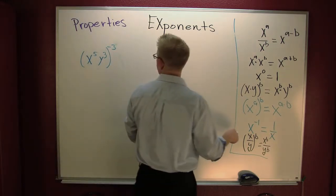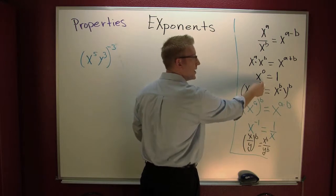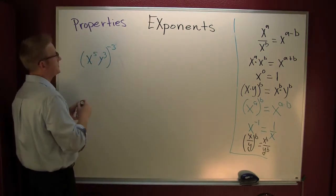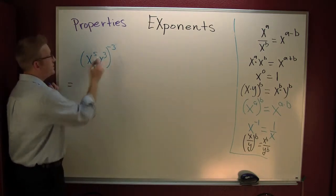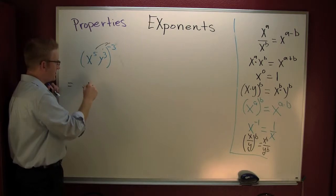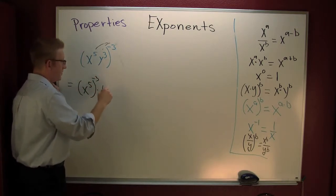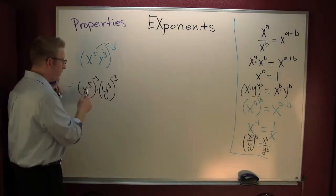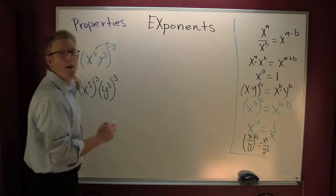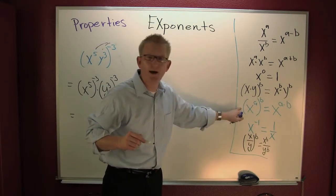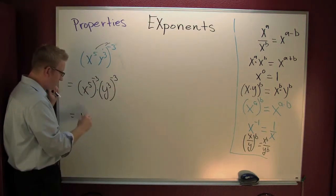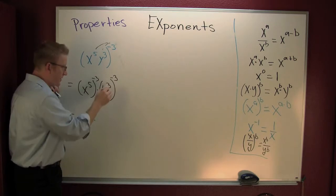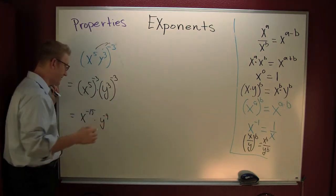First, I could apply the product raised to a power — BAM, let's handle it. So this is x to the fifth to the minus third, times y to the third to the minus third. I get a minus three and a minus three. Now I have a power raised to a power, so I multiply. That gives x to the — five times minus three — minus fifteen, and y to the minus nine.